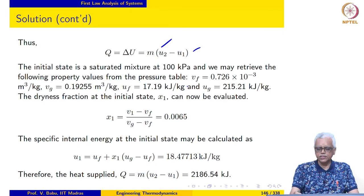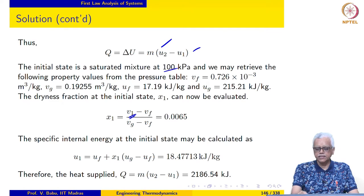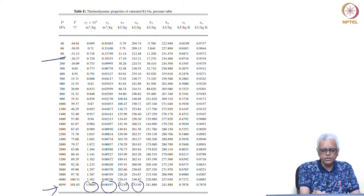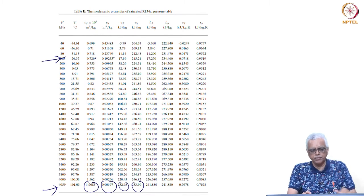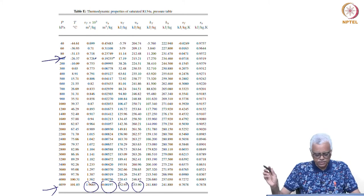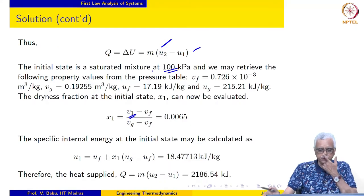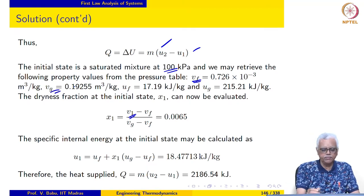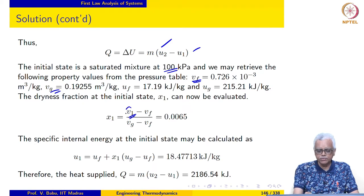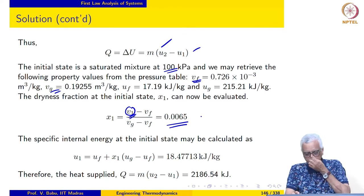At the initial state, the specific volume is known and it is at a pressure of 100 kilopascal. So we go to the pressure table corresponding to 100 kilopascal and retrieve the specific volume of the saturated liquid and saturated vapour. Using this, we can calculate the dryness fraction. Using the specific volume of the saturated liquid and saturated vapour, we evaluate the dryness fraction at the initial state to be equal to 0.0065.